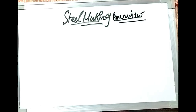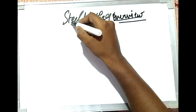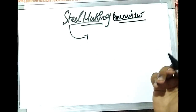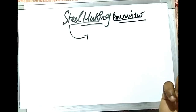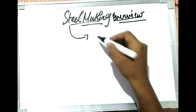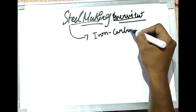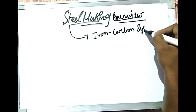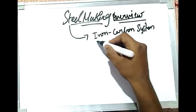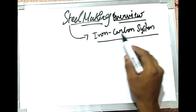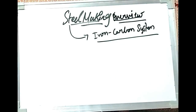So firstly, what is steel? Steel is a type of component present in the iron-carbon diagram — that means steel belongs to the iron-carbon system. Steel is a solid solution of carbon in iron.